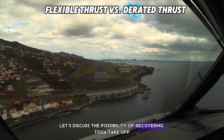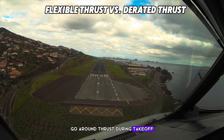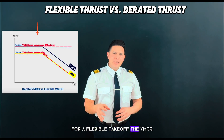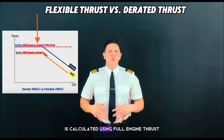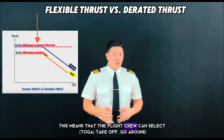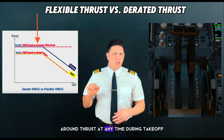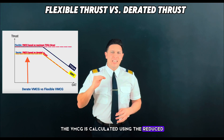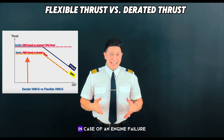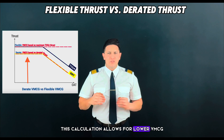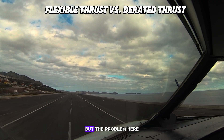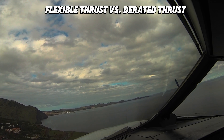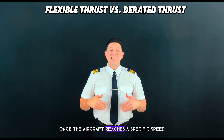Let's discuss the possibility of recovering TOGA (Takeoff/Go-Around) thrust during takeoff and how it differs between flexible and derated thrust settings. For a flexible takeoff, the VMCG is calculated using full engine thrust, meaning the flight crew can select TOGA thrust at any time during takeoff if needed. In contrast, for a derated takeoff, the VMCG is calculated using the reduced derated thrust from the remaining engine in case of engine failure. This calculation allows for a lower VMCG and a slower V1 decision speed, but it also limits when TOGA thrust can be safely used.